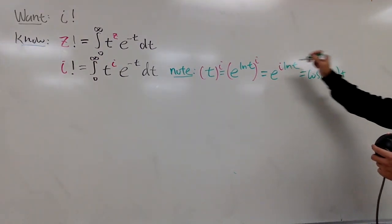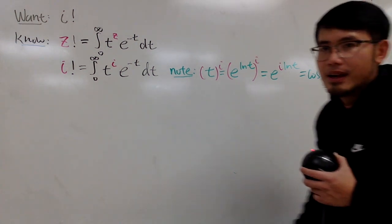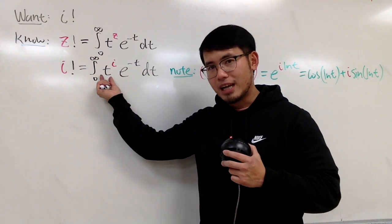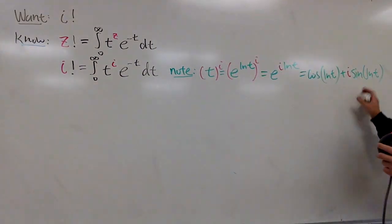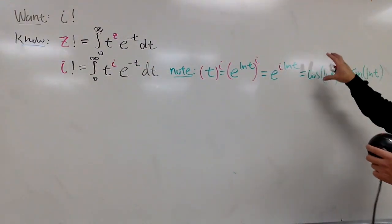And we add i times sine of ln t, like this. Which is very nice, very nice, isn't it? And, I will just come back here for t to the i's power. I will just replace that. And don't forget, we still have to multiply e to the negative t power.